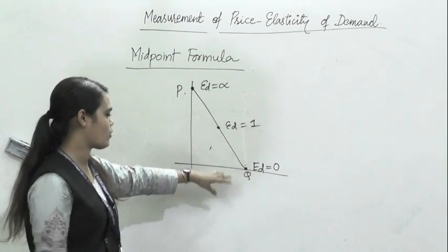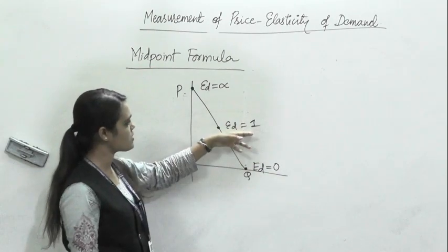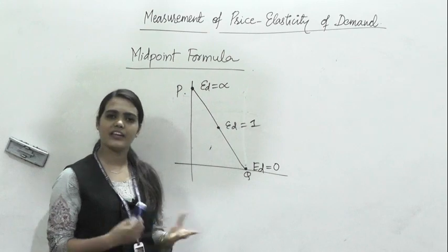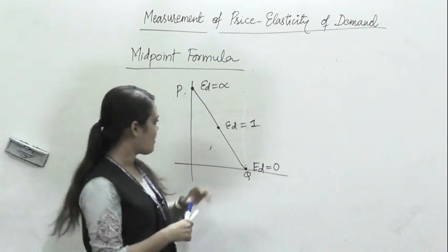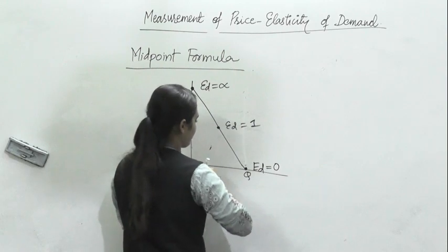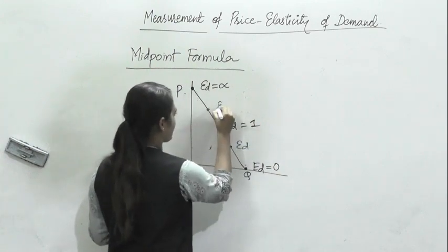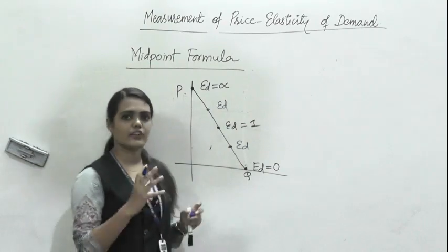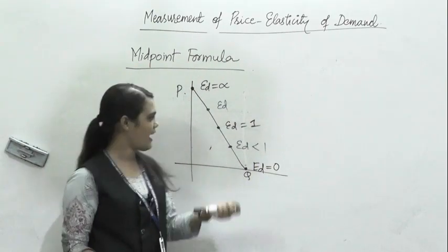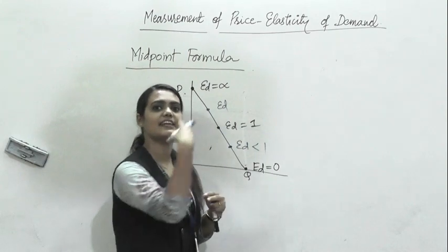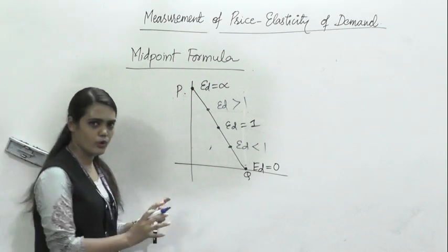In the middle of the demand curve, elasticity is always equal to one — unitary elastic. Moving from the midpoint toward zero, elasticity is less than one and relatively inelastic. Moving from the midpoint toward infinity, elasticity is greater than one and relatively elastic.